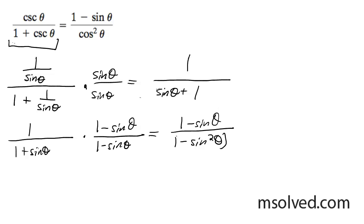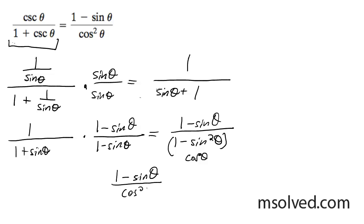Now, this is a trig property because sine squared theta plus cosine squared theta equals 1, and cosine squared theta is equal to 1 minus sine squared theta. So we can simply convert this into cosine squared theta, and we get 1 minus sine theta over cosine squared theta. That's our solution.